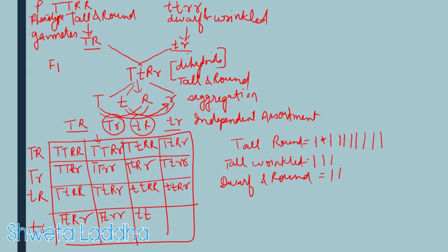Small t small t capital R capital R gives dwarf and round — one. Small t small t capital R small r gives another dwarf and round — totaling 3 dwarf and round plants. And finally, small t small t small r small r gives dwarf and wrinkled, totaling only 1.